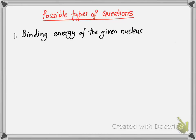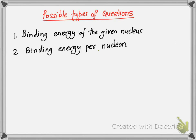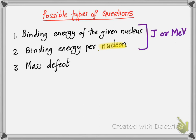This video is about binding energy — how to calculate the binding energy of a given nucleus. The possible types of questions in the examination include: calculating binding energy of a given nucleus, and binding energy per nucleon. The word 'nucleon' means neutrons and protons together.